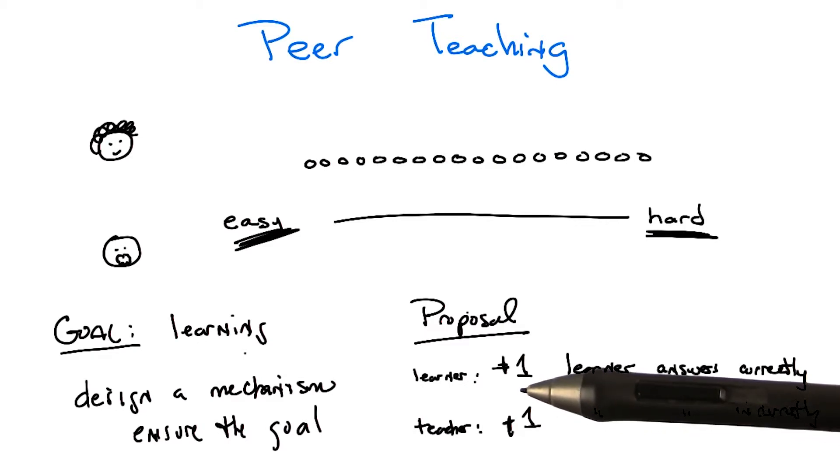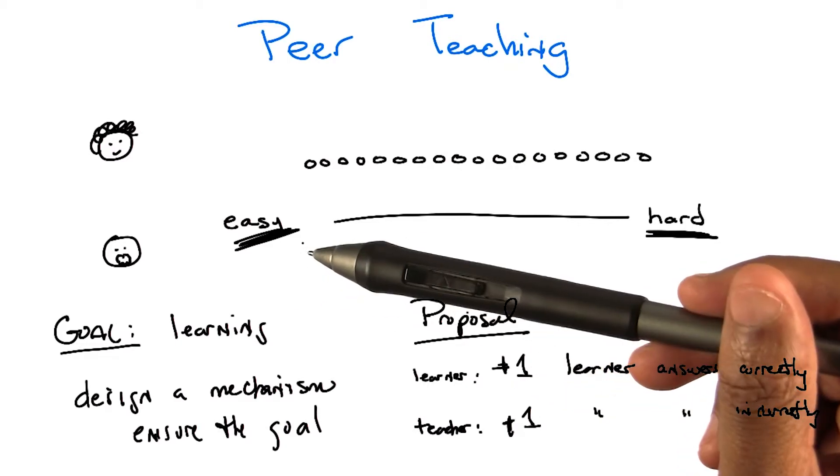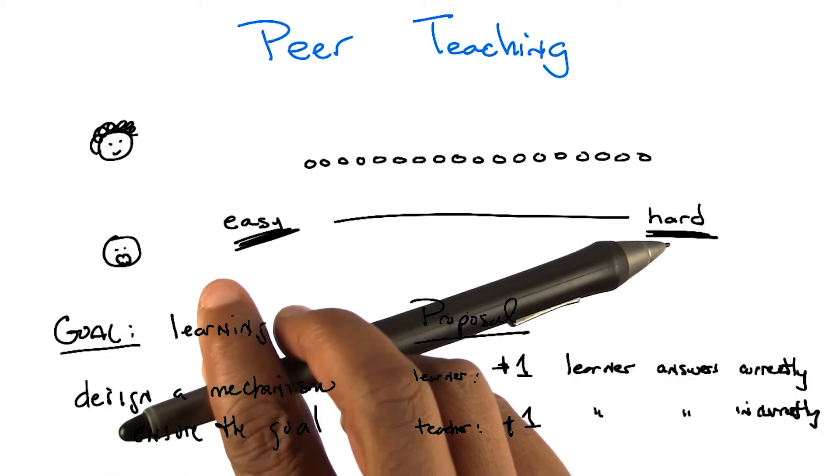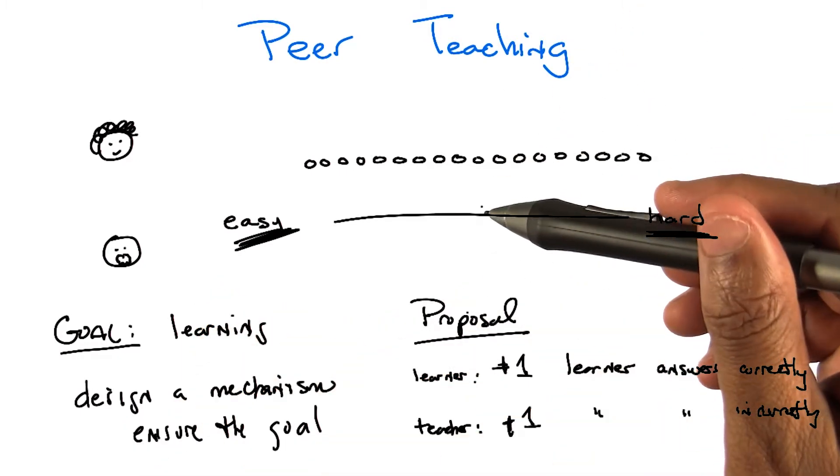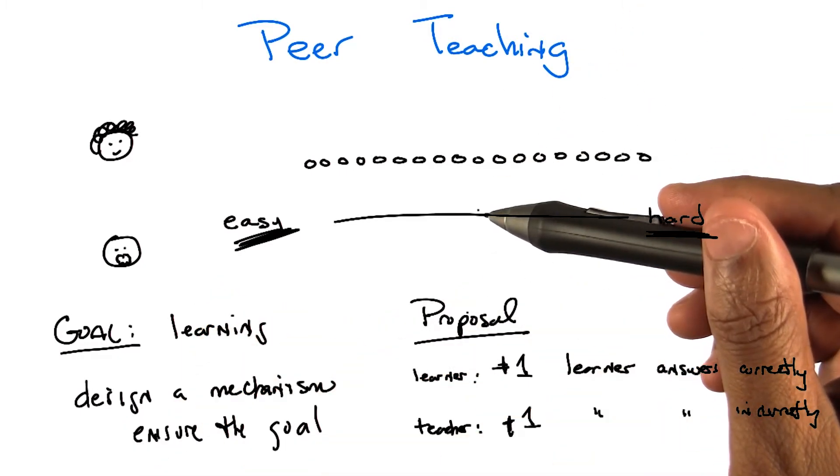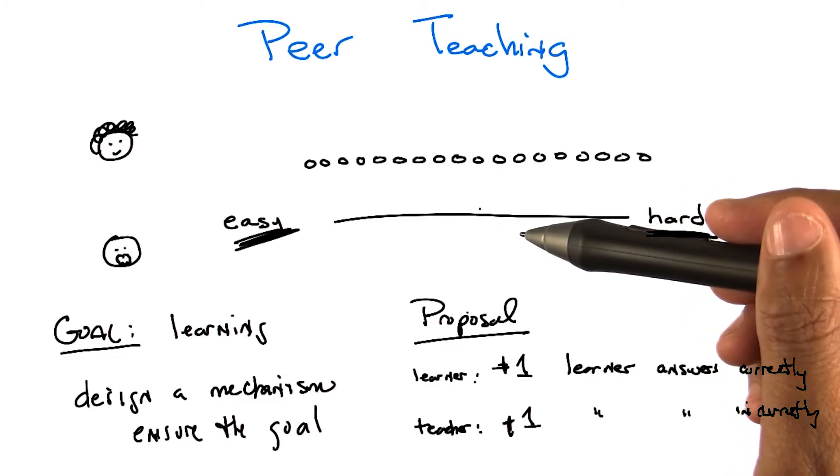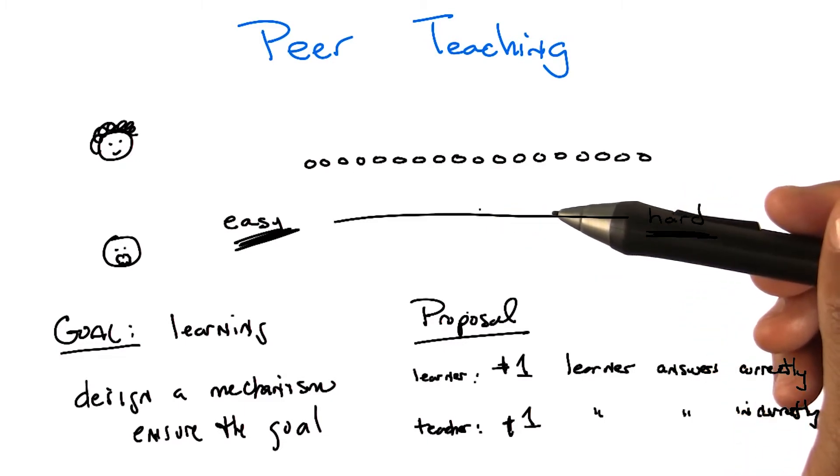Well, so if the teacher getting plus one for the learner getting something correctly ended up making things too easy, and a minus one made things too hard, then right in the middle is a zero. Right. So what about the teacher gets zero for the learner answering correctly? Well, the teacher gets zero for the learner answering correctly, and it doesn't matter what the teacher does. So maybe the teacher can do the right thing now. But why?